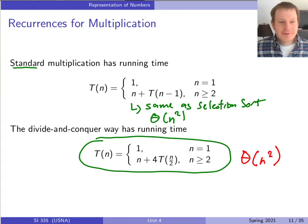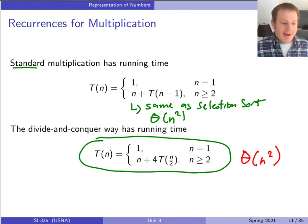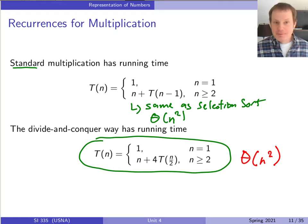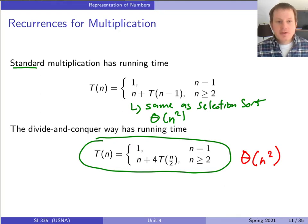Hi there, good afternoon. Let's talk about multiplication. Last time, this is where we left it, and I teased you — it seems like some people may have been genuinely teased by my question, which means I asked it well. The question is simply: is n-squared the best we can do for multiplication, or not?